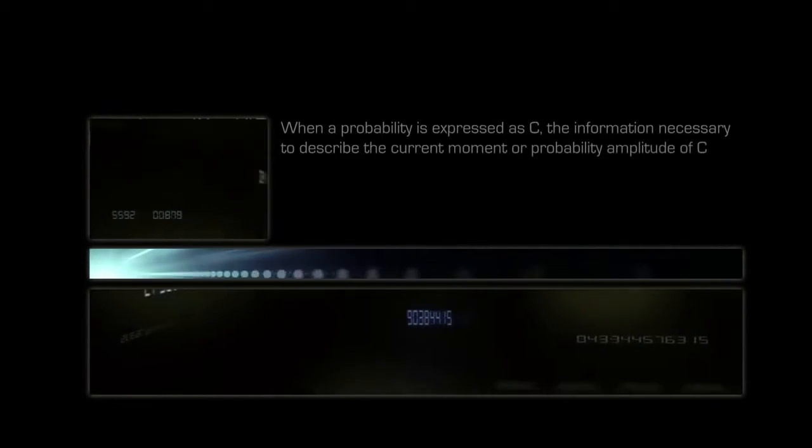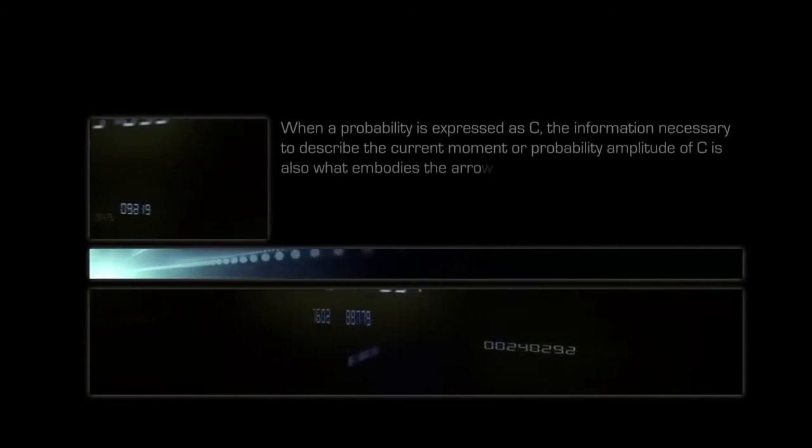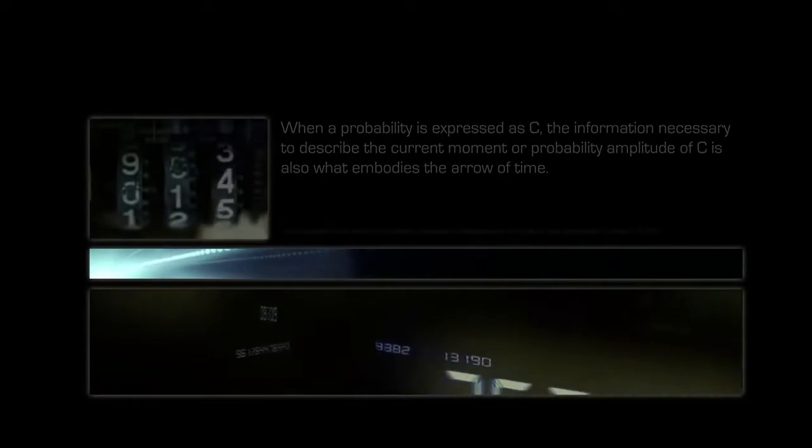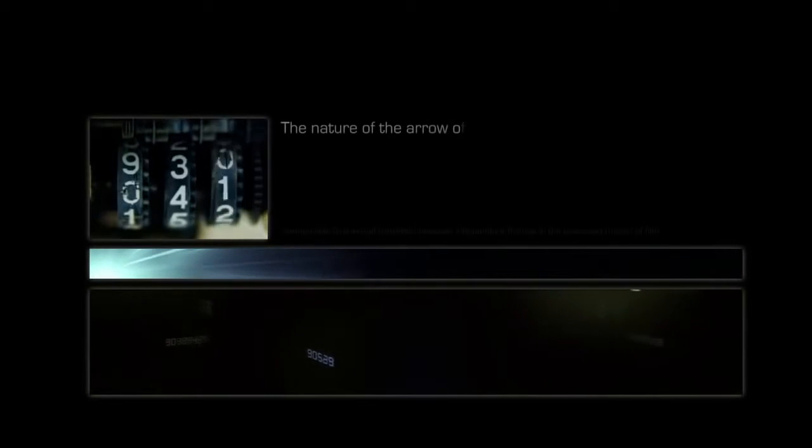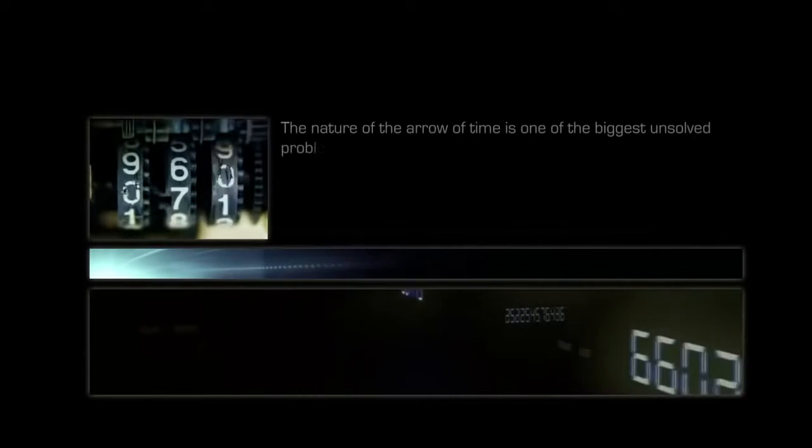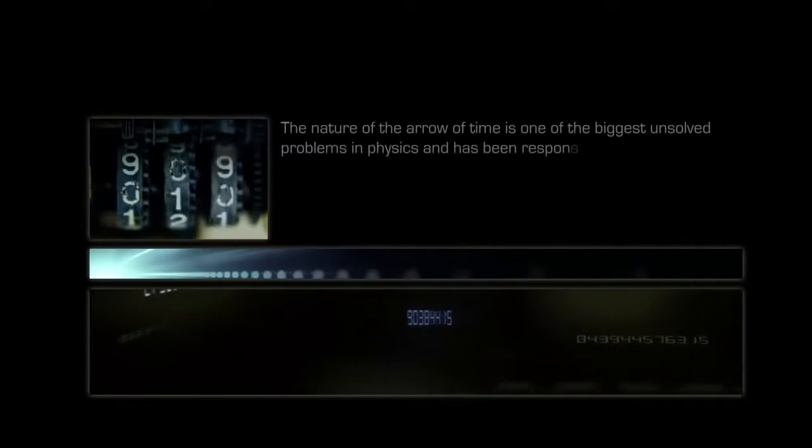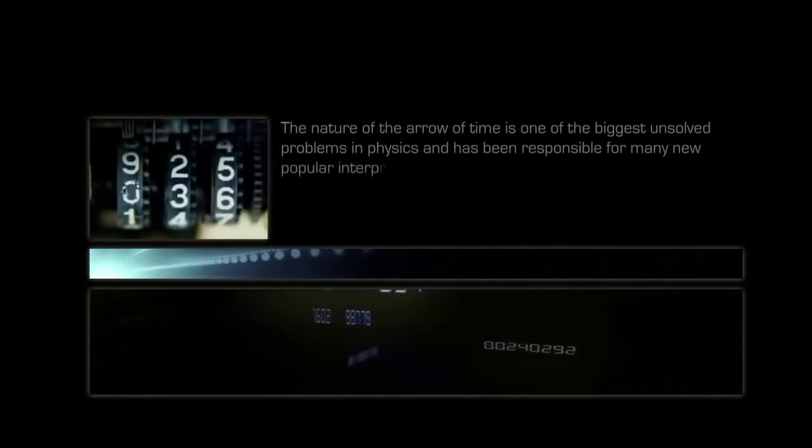When a probability is expressed as C, the information necessary to describe the current moment or probability amplitude of C is also what embodies the arrow of time. The nature of the arrow of time is one of the biggest unsolved problems in physics and has been responsible for many new popular interpretations. The holographic principle, for example, a property of quantum gravity and string theories, theorizes how the entire universe can be seen as an information structure of only two dimensions.